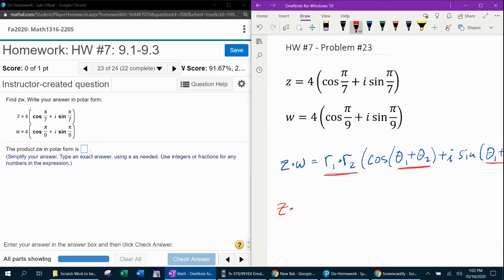So here we go. Z times W, the product, we're going to multiply the radii, four times four is 16, cosine of, and then we're going to add the angles.